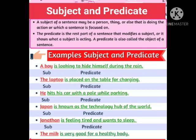Next: 'He hits his car with the pole while parking.' Who hits the car? He. This sentence is focused on he, so 'he' is the subject. What does he do? 'Hits his car with the pole while parking' — that is the predicate. Next: 'Japan is known as the technology hub of the world.' About what is the sentence telling? Japan. So Japan is the subject, and 'is known as the technology hub of the world' is the predicate.